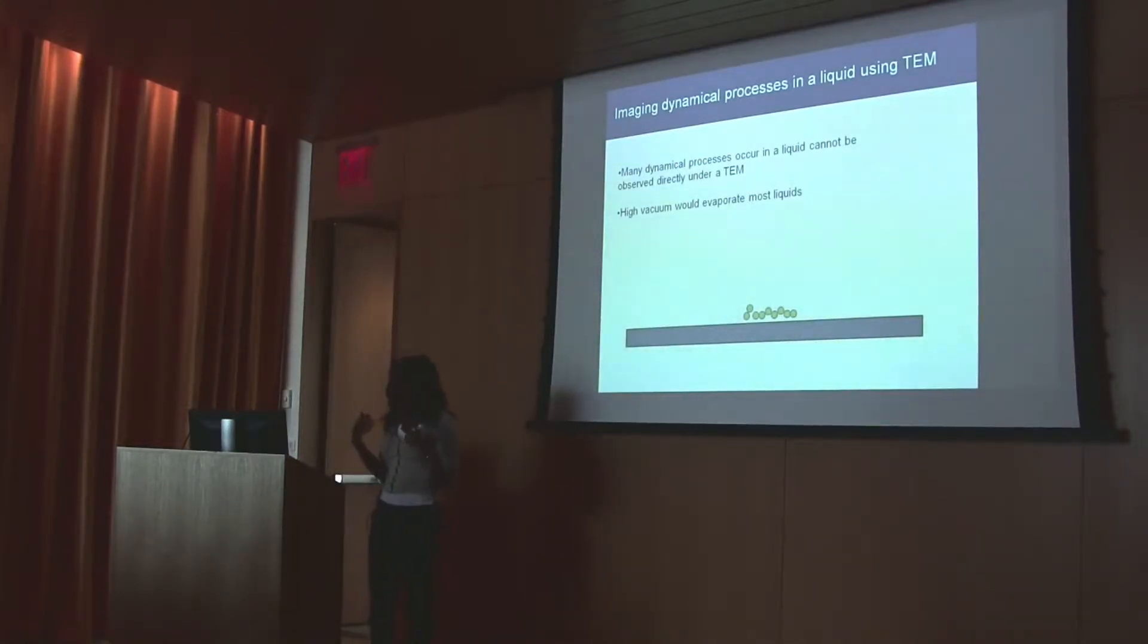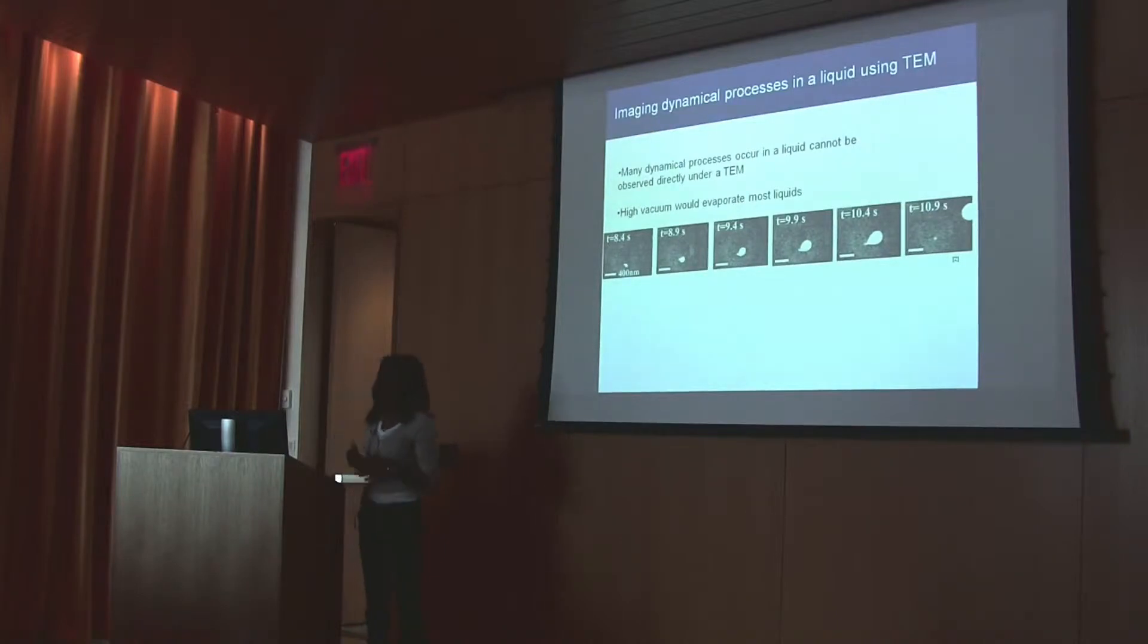What people usually do to image these dynamical processes in liquids is they mix a solution and take a snapshot during the process at a certain time. Then they start the process over and take a snapshot at a later time, and repeat this until they have a bunch of snapshots that they can put together and merge and make one dynamical movie.